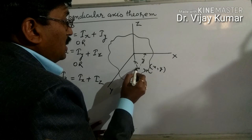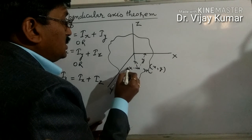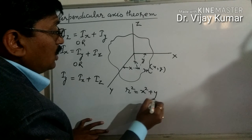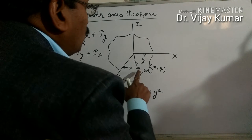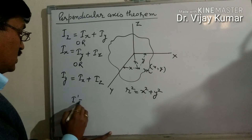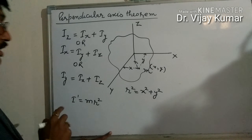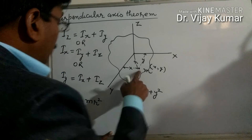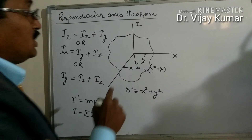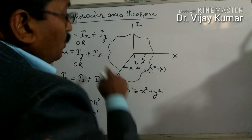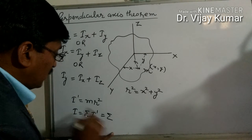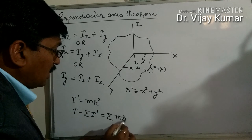The distance from the x-axis is y, and the distance from the y-axis is x, and we know that r-squared equals x-squared plus y-squared. The moment of inertia of this particle about the z-axis is I_z equal to m·r-squared. The moment of inertia of the body is equal to the sum: sigma m·r-squared, since moment of inertia is a scalar quantity, so I_z equals sigma m·r-squared.